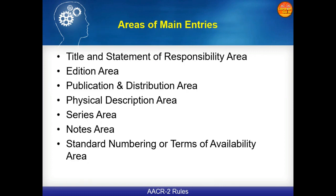These are the main areas of main entries. When we prepare one catalog, we incorporate and accommodate information in: the Title and Statement of Responsibility area, the Edition area, the Publication and Distribution area, the Physical Description area, the Series area, the Notes area, and the Standard Numbering or Terms of Availability area.